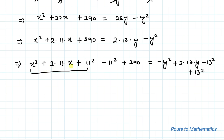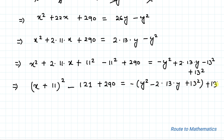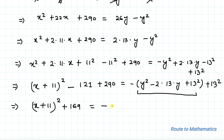Here we can apply the (a + b)² identity: x² + 2·11·x + 11² becomes (x + 11)². So we have (x + 11)² - 121 + 290 = -(y² - 2·13·y + 13²) + 13². This gives (x + 11)² + 169 = -(y - 13)² + 169.